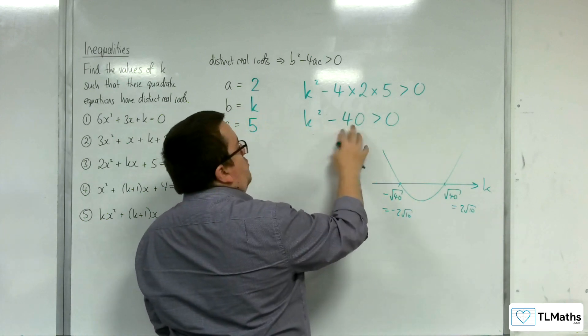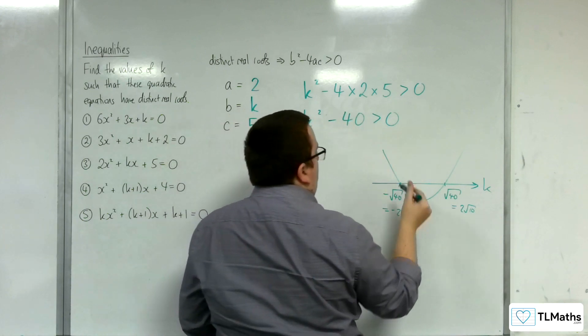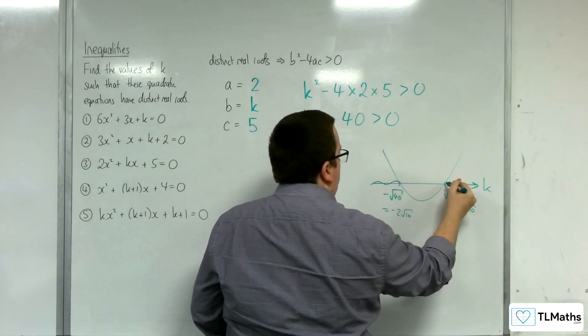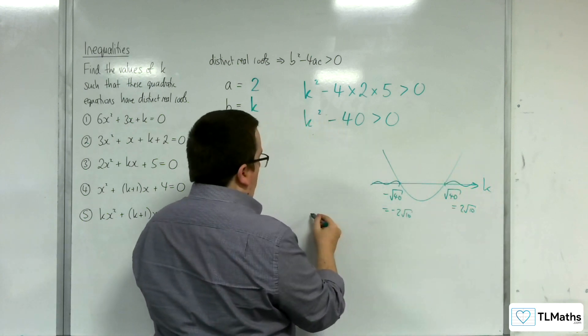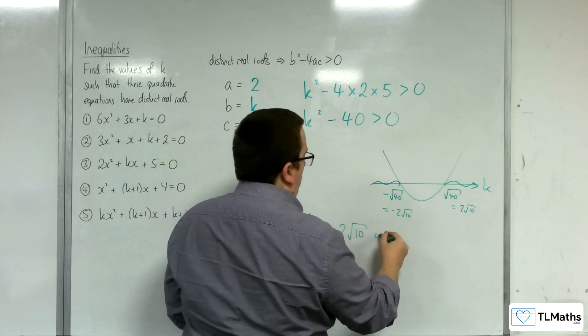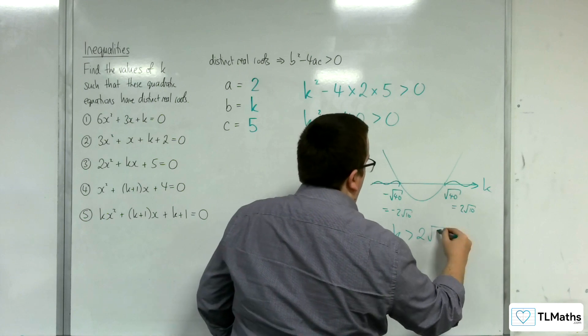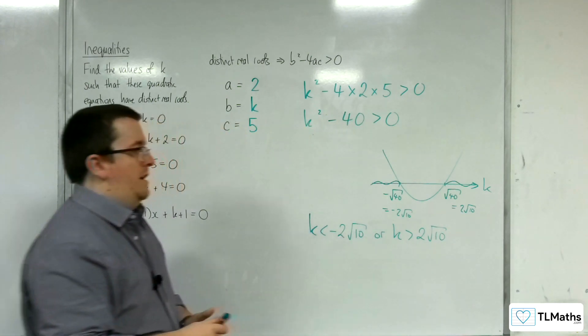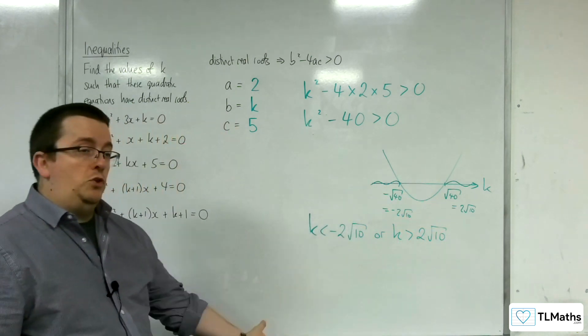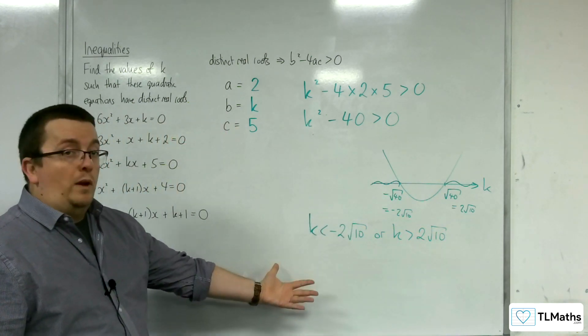Where is the parabola above the k-axis? Well, it's above it there and there. So, that region and that region. So, k would have to be less than minus 2 root 10, or k is greater than positive 2 root 10. Two distinct regions, so two inequalities.